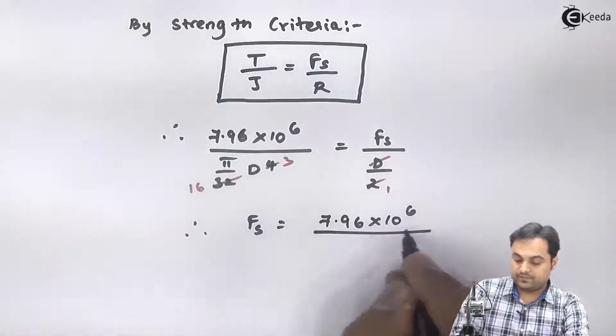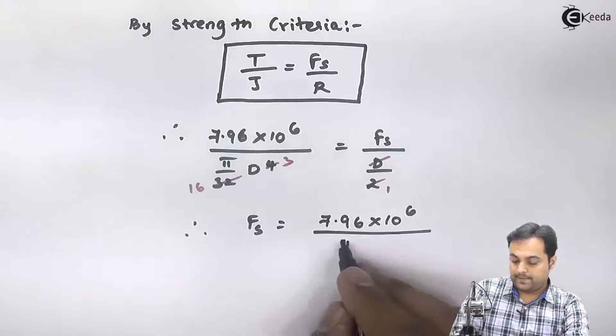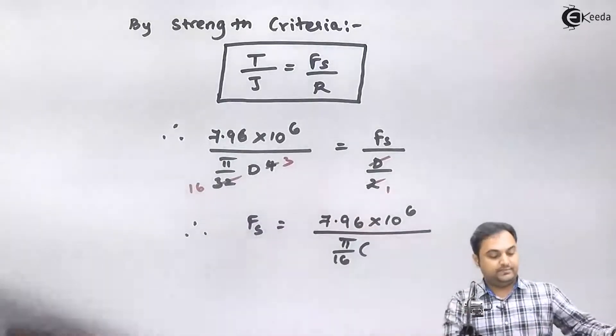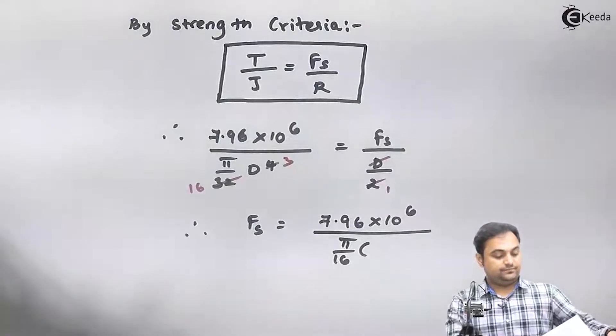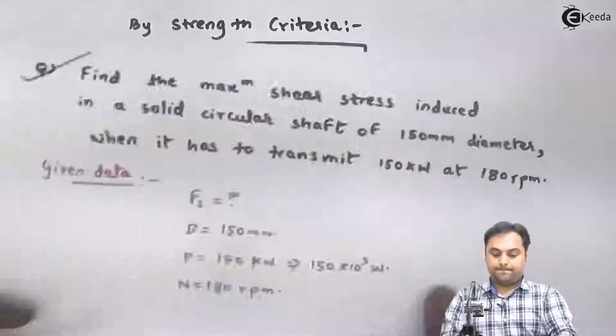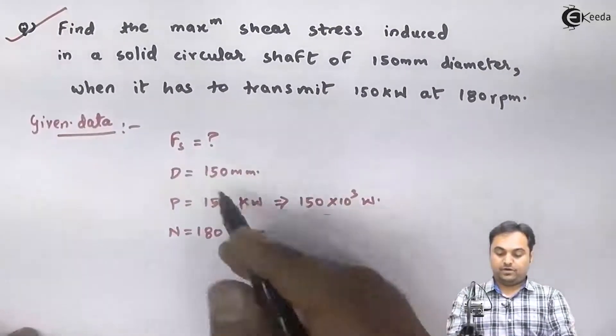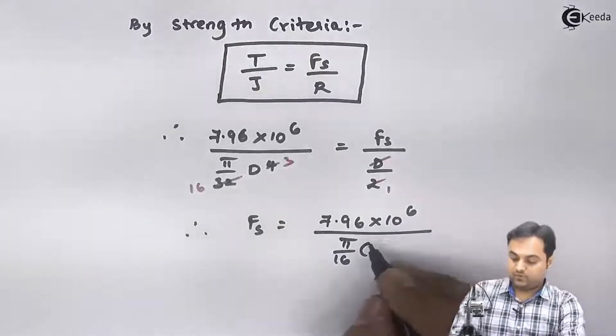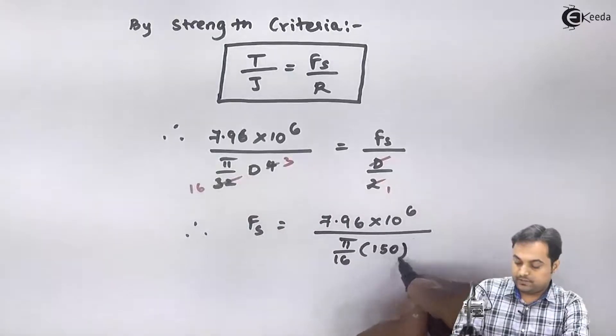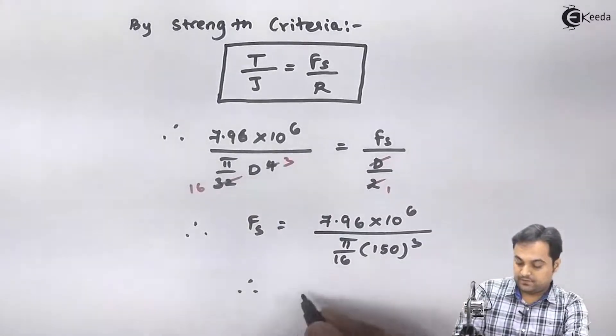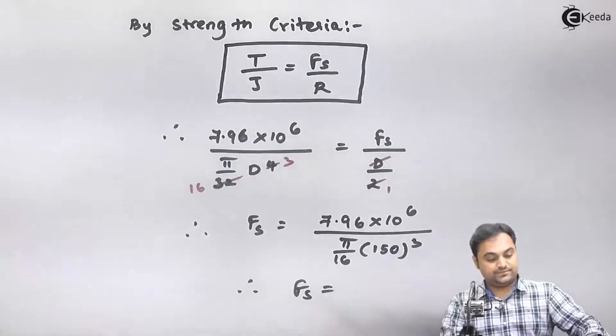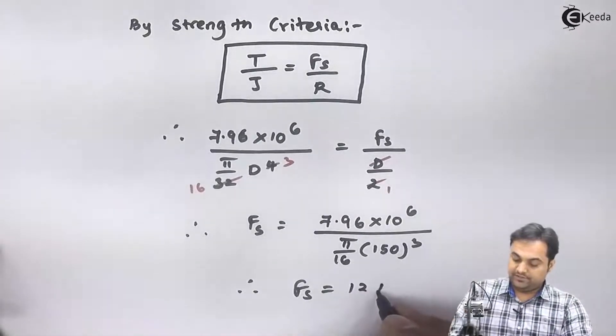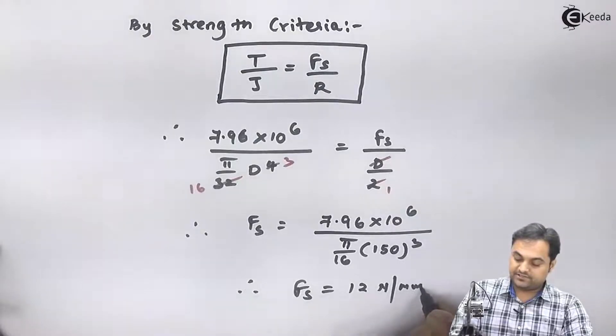Divided by pi by 16 into diameter cube. And the diameter is given in the question, it is 150 mm, so 150 cube. And from this I will be getting my answer of shear stress as 12 Newton per millimeter square, that is 12 megapascal.